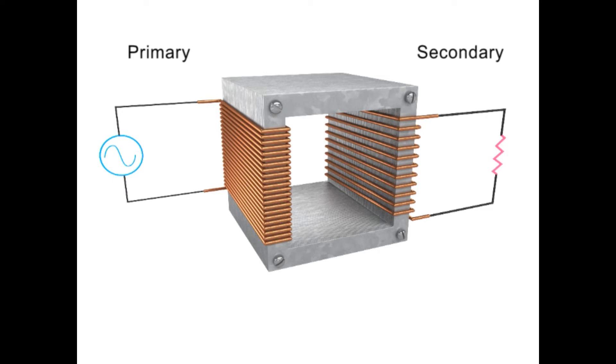Transformers can either step up or step down a voltage. In a step down transformer, the number of turns in the primary coil is greater than the number of turns in the secondary coil.